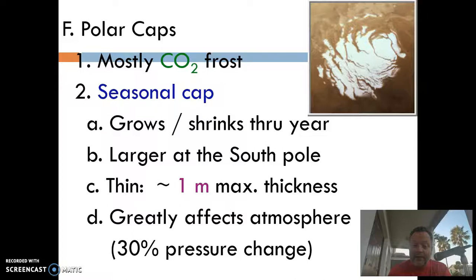It's pretty incredible — it's spread out over a big enough area that when it does sublimate, it changes the atmosphere. The atmospheric pressure actually changes by 30%. That's huge — it's like its own little mini global warming. So it's during the southern summers on Mars when you have the most weather, winds, and dust storms.